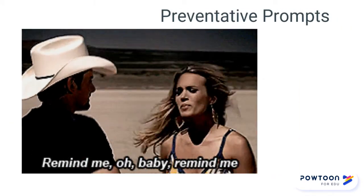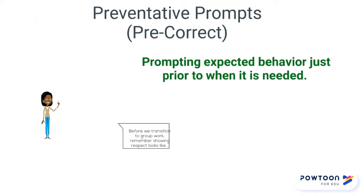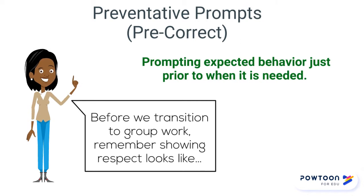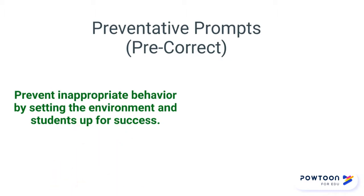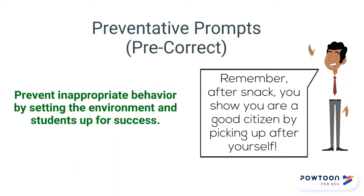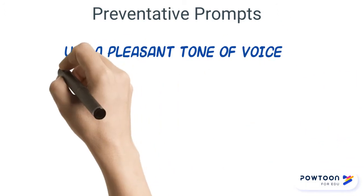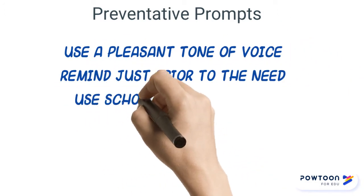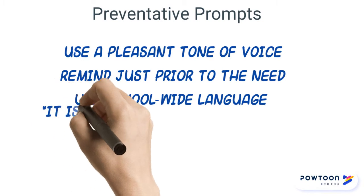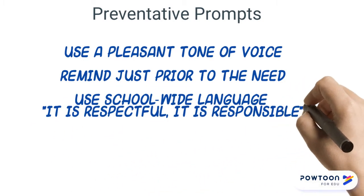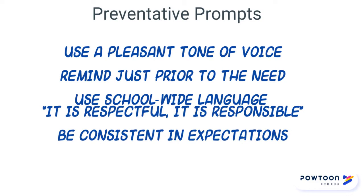Preventative prompts, or pre-corrects, are simply prompting expected behavior just prior to when it is needed. Some tips when you use preventative prompts are: use a pleasant tone of voice, remind your students what you expect just prior to the need, use school-wide language such as 'it is respectful' or 'it is responsible,' and be as consistent as possible in your expectations.